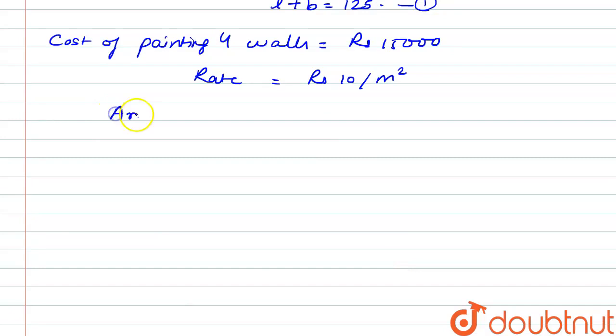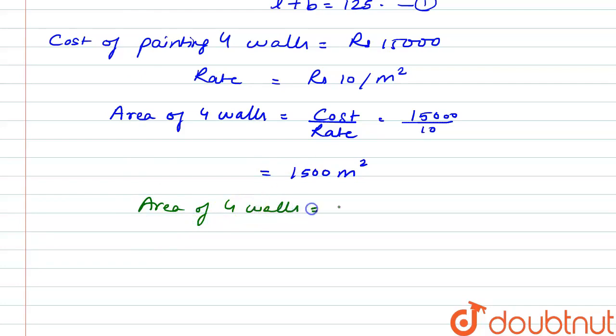So from here we have the area of 4 walls as cost divided by rate, that is 15,000 divided by 10. So the area comes out to be 1500 meters square. And we know that the area of 4 walls is twice of L plus B into H.